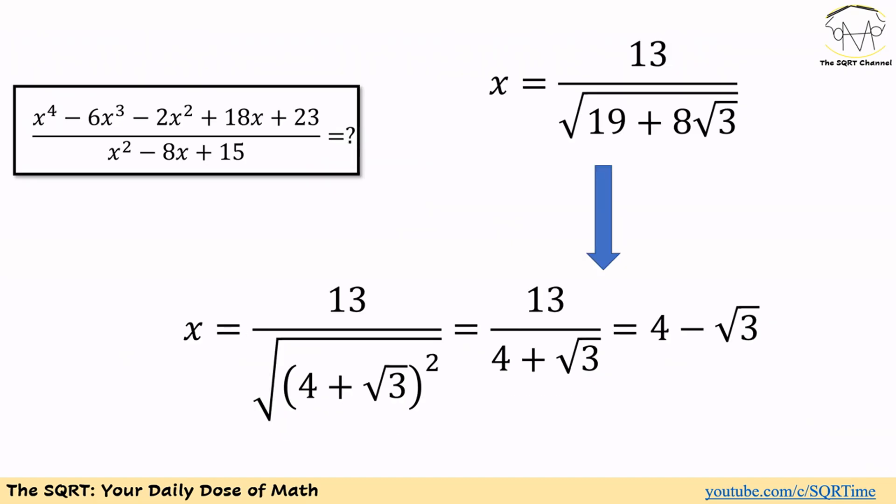To solve this problem, let's start with some simplifications on x, and then we will try to extract the polynomial seen in the fraction. We have x equal to 13 over the square root of 19 plus 8 square root of 3. You can verify that 19 plus 8 square root of 3 can be written as the quantity 4 plus radical 3, to the power of 2. Then we can remove the radical and simplify it as 4 plus square root of 3.